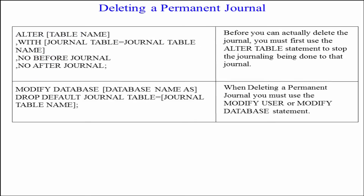Before you can actually delete the journal, you must first use the ALTER TABLE statement to stop the journaling being done to that journal. When deleting a permanent journal, you must use the MODIFY USER or MODIFY DATABASE statement.